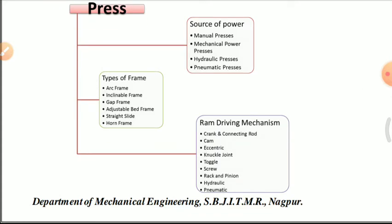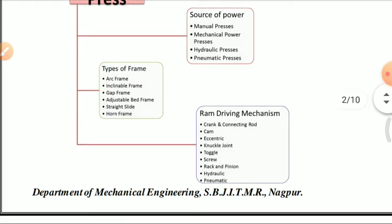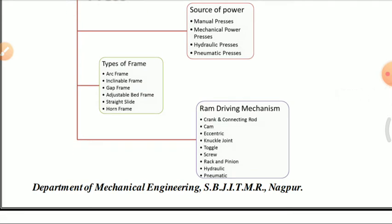The second classification is by type of frame. Frame types include the arc frame, inclinable frame, gap frame, adjustable bed frame, straight slide, and horn frame.